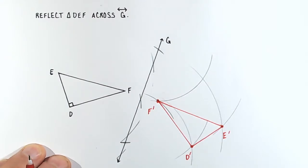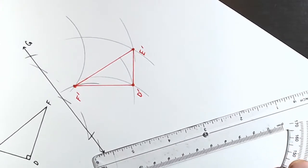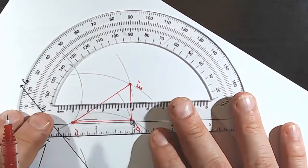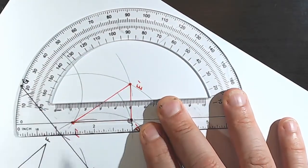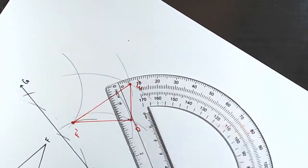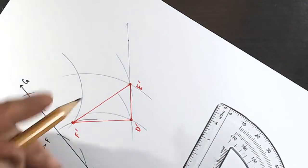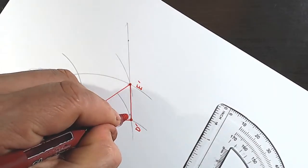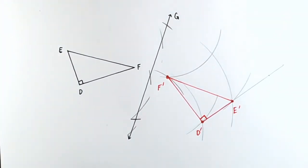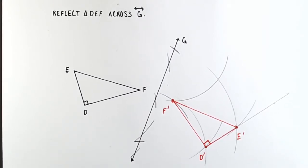And within some margin of error, because we have to allow for the error of the pencil, this should be a right triangle. So let's check to make sure that it is. There's 90 degrees. So I should be able to pass a point right through. And it looks like it is. So this is in fact a right triangle, giving me further confidence that we correctly reflected the image. And that is how you reflect a figure across a line.